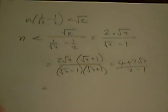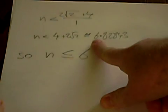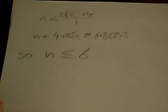n times 1 over root 2 minus 1 half is less than the square root of 2. When you simplify that, then you get this equation here. n is less than 4 plus 2 root 2, which is about 6.8. So n has to be less than or equal to 6.